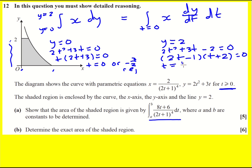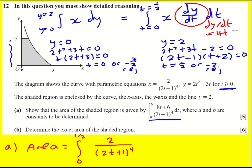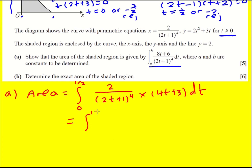When y equals 2, we have 2t² + 3t = 2, rearranging to 2t² + 3t − 2 = 0. Factorising gives t = 1/2 or t = −2; we reject −2 since t ≥ 0, so the top limit is t = 1/2. Therefore the area equals the integral from 0 to 1/2 of x — which is 2/(2t+1)⁴ — multiplied by dy/dt, which is 4t + 3. This gives us (8t + 6)/(2t+1)⁴.